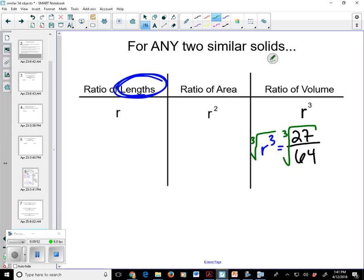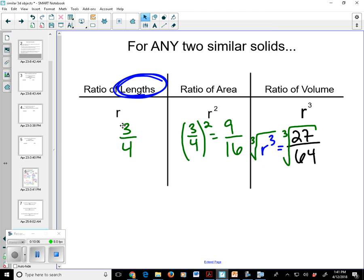So if you have 3 fourths as the ratio of the lengths, how do you find the ratio of the area? You just square it. And you get 9 sixteenths. And there you have it. You can go back and forth to find the ratio of the lengths, areas, and volumes of any similar solid without even having to use a formula. Because as long as you know that they're similar, that means that all the corresponding lengths are proportional. This applies every single time.